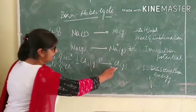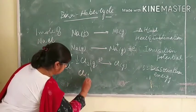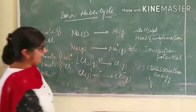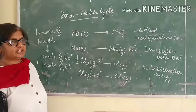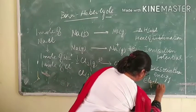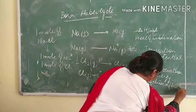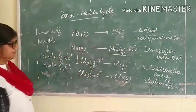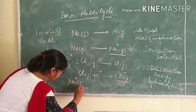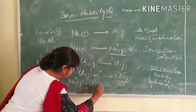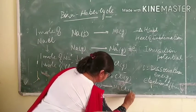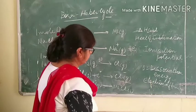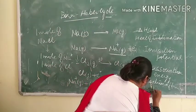Now, since the chlorine gaseous atom is formed, this chlorine accepts an electron to form a chloride ion. When the electron is added to the neutral gaseous atom, energy is released. This energy is known as electron affinity. We now have sodium ion in the gaseous state and chloride ion in the gaseous state. These two ions combine to form sodium chloride, and the energy released during this process is known as lattice energy.